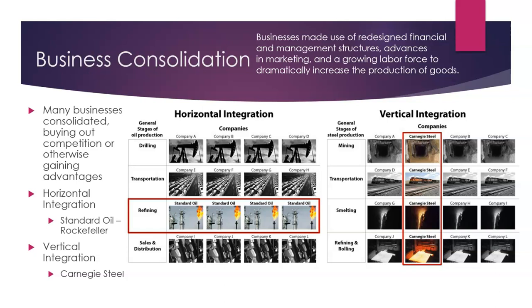The other form of business consolidation was vertical integration, as illustrated by Andrew Carnegie's steel company, Carnegie Steel. He started with just the manufacturing of steel, but quickly began buying companies that handled other parts of the overall steel production, from the extraction of the ore, to its transportation, to the smelting, the refining process, and the delivery to the customer. By owning every step of the process, Carnegie Steel eliminated middlemen and saved more of their profits for themselves. Vertical integration is when a company acquires all of the complementary industries that support its business, meaning near-complete domination of the industry with little room for competition.